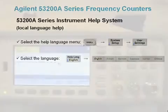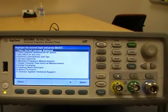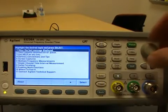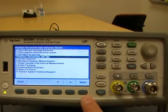Let's take a look at this using the instrument. Pressing the help key opens the instrument help menu. Use the rotary knob to highlight and the select key to open a particular help topic.